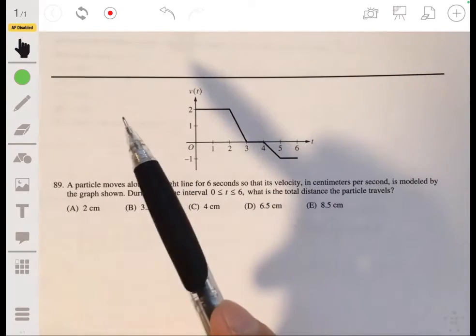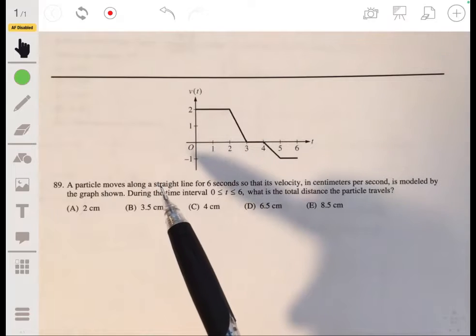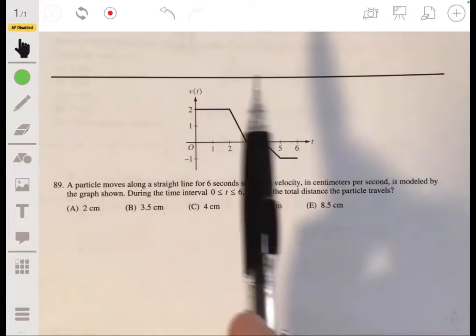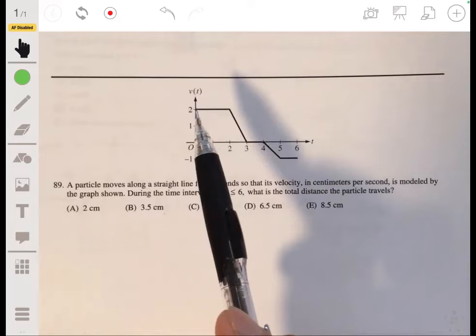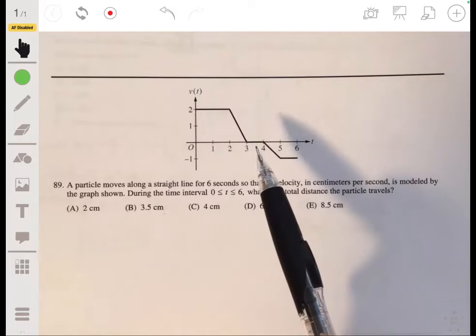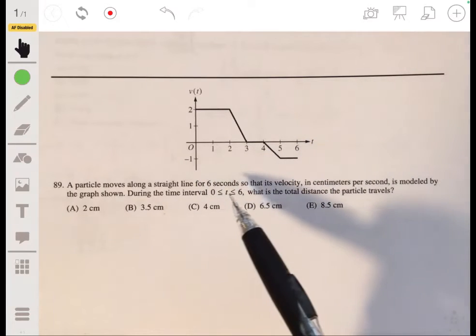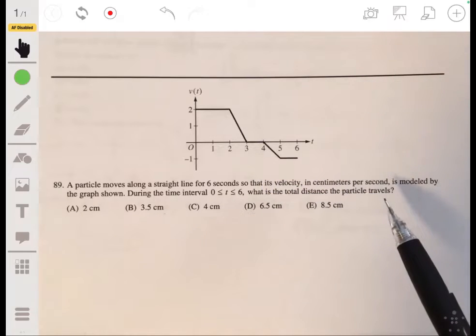We'll write 89. We have a particle that moves along a straight line for six seconds. The velocity in centimeters per second is modeled by this graph here. We got a straight line, slope, straight line, horizontal line, slope, horizontal line. During the time interval zero to six, what is the total distance the particle travels?